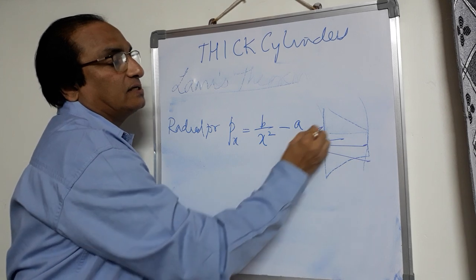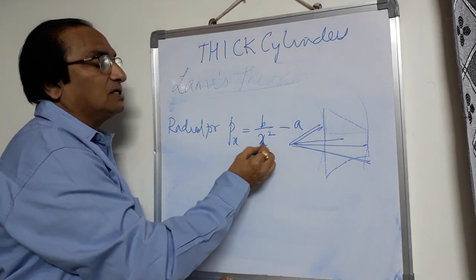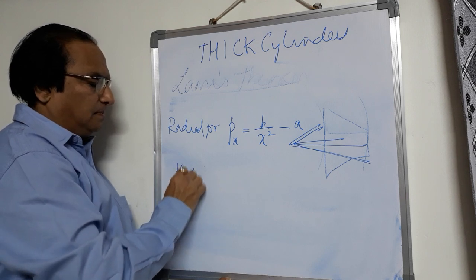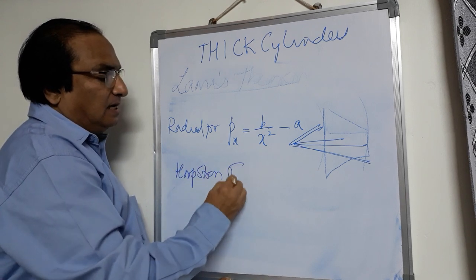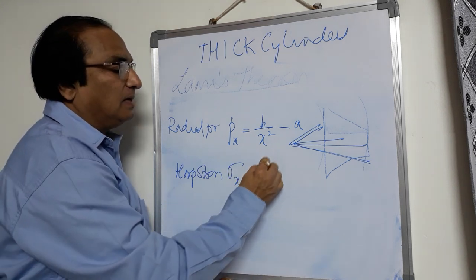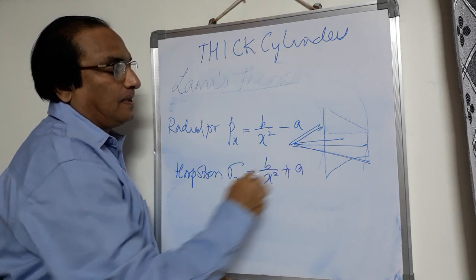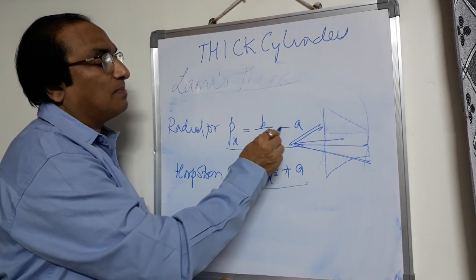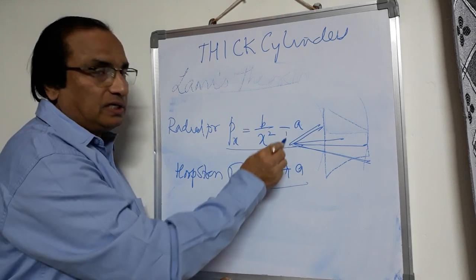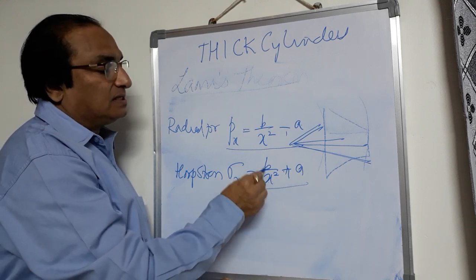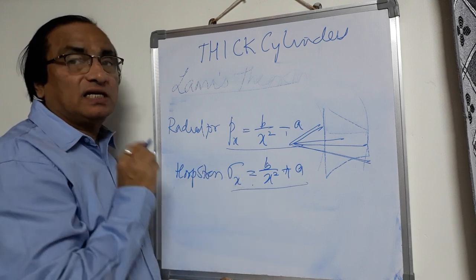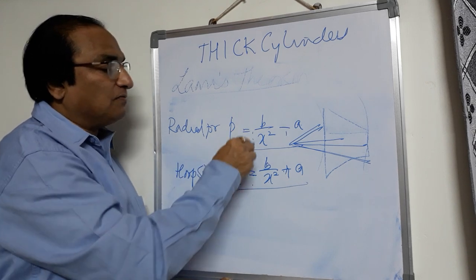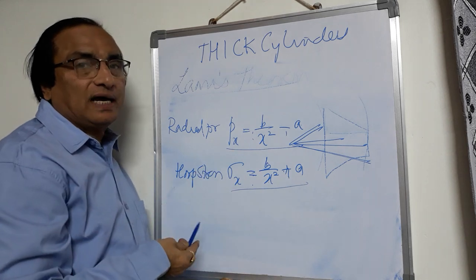We go on changing the distances — inner radius, outer radius. So X is the distance from the center, inner face to outer face. He has also given another formula for hoop stress: hoop stress at any distance X from the center is given by B/X² + A. The only difference between radial pressure and hoop stress is that radial pressure is B/X² − A and hoop stress is B/X² + A. Using these two equations, we will be solving and drawing the radial pressure diagram and the hoop stress diagram.